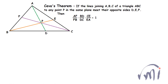In Ceva's theorem, if we have triangle ABC and suppose there is a point P in the same plane as ABC, and if we draw lines AP, BP and CP and extend these lines so they cut the opposite sides at points D, E and F respectively, then AF divided by FP multiplied by BD divided by DC multiplied by CE divided by EA will be equal to 1. The lines AP, BP and CP are called Cevians.